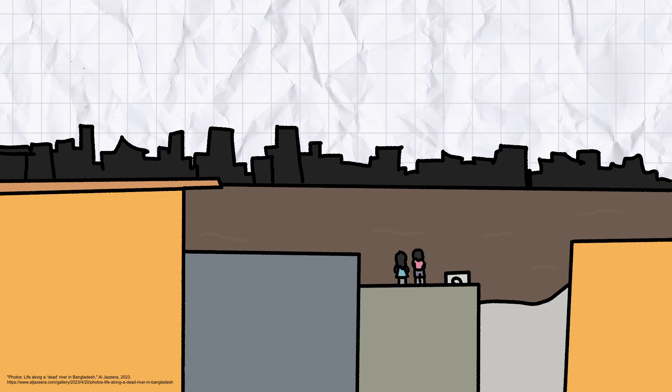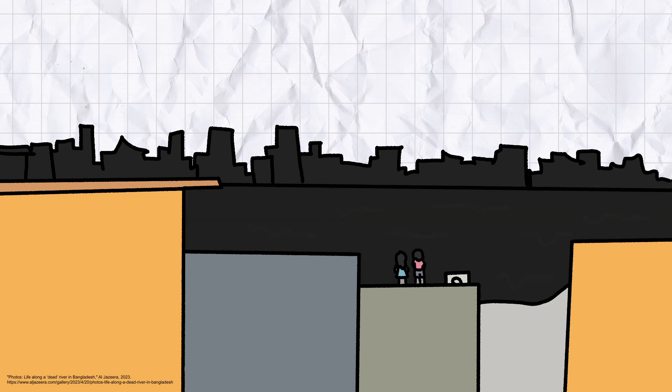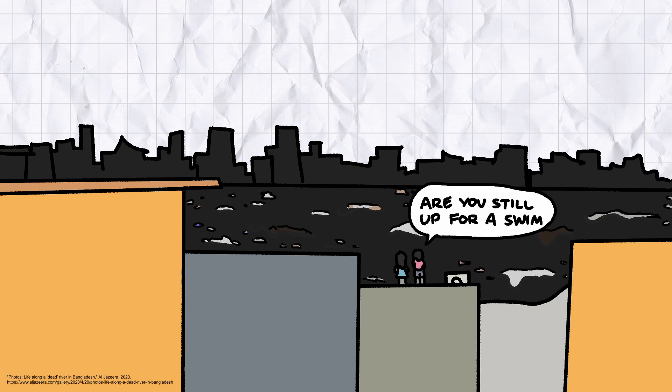When the restorative rainstorms of the monsoon season come to an end, the putrid waters of the Buriganga turn pitch black. Wherever you go along the riverbank, raw sewage, dead animals and plastic waste bob along its waters like unusually smelly rubber duckies.